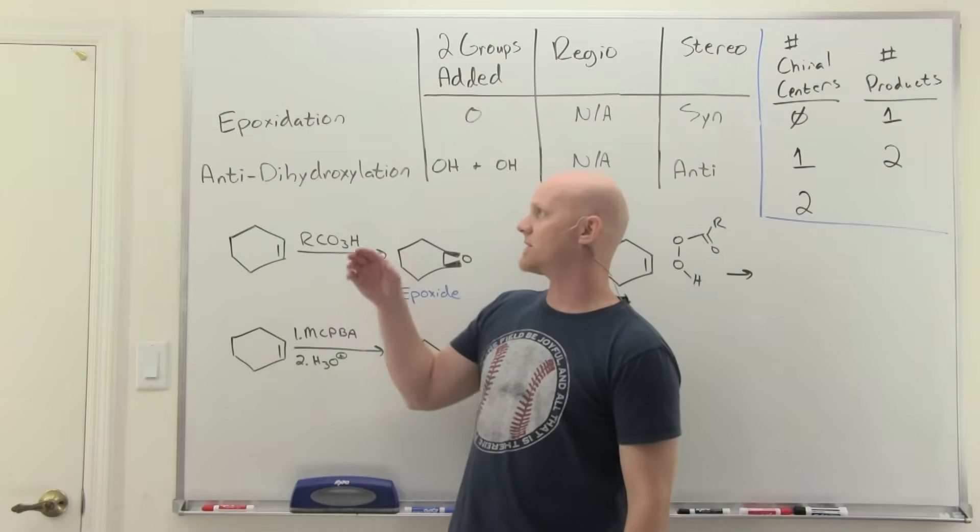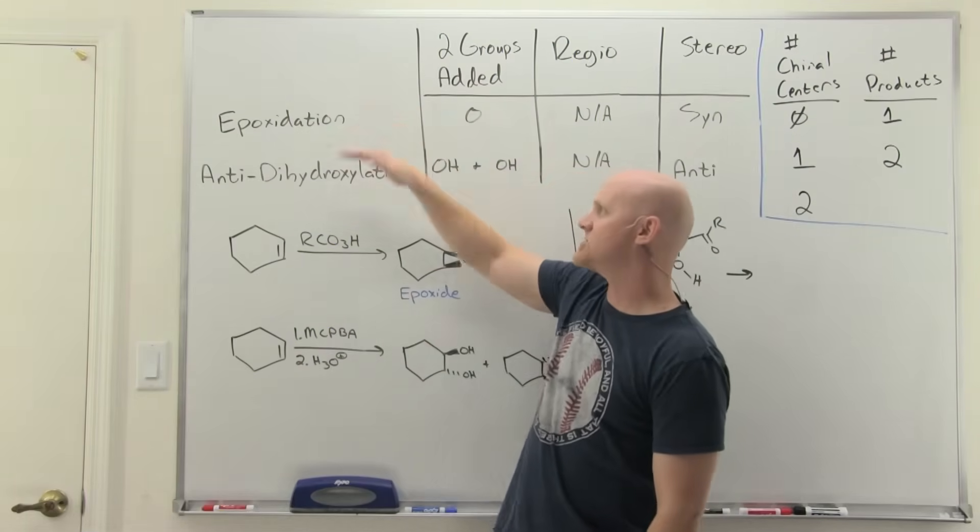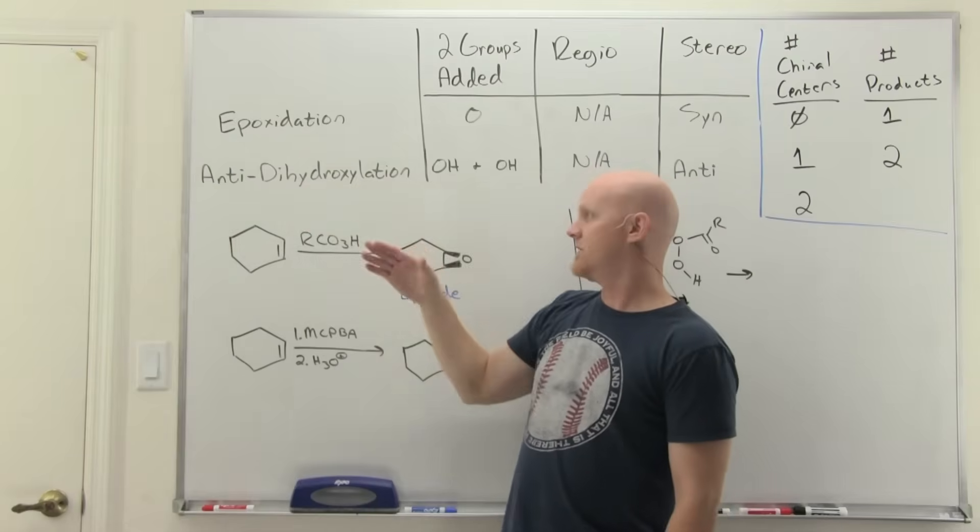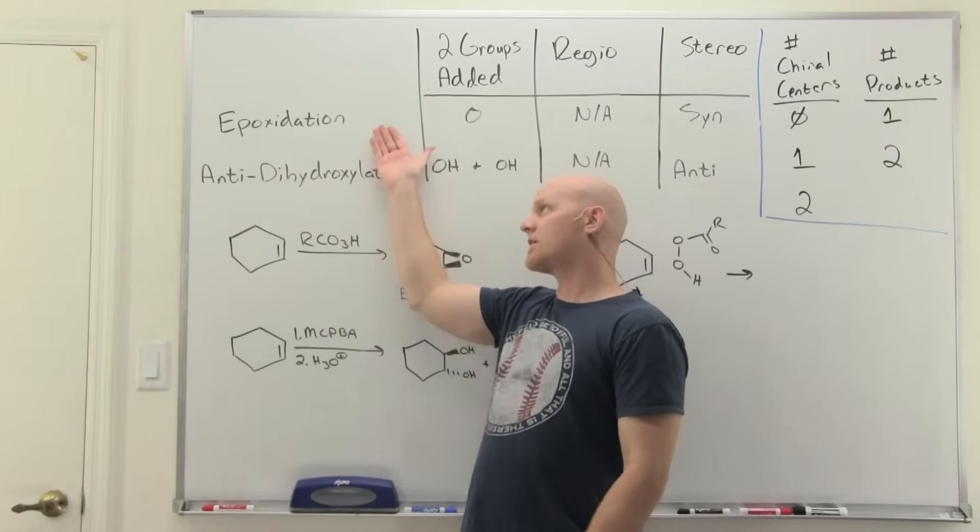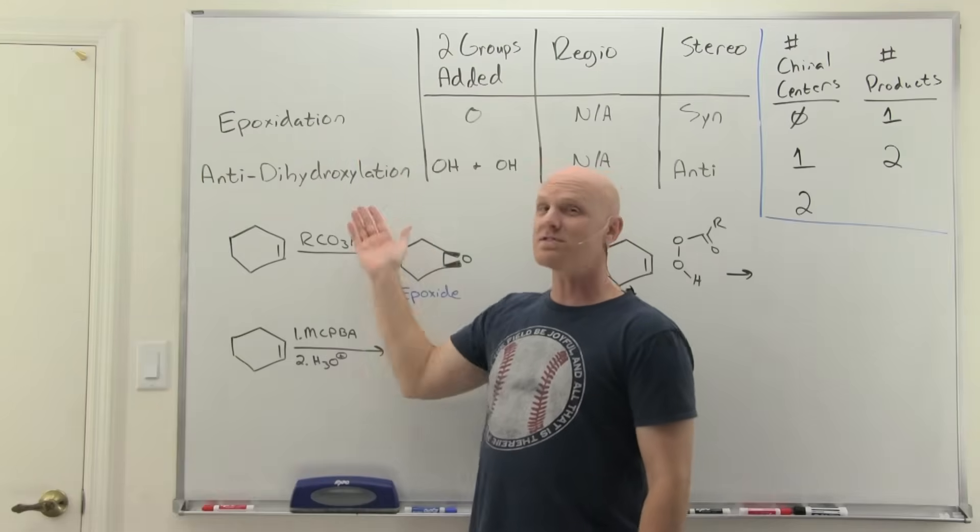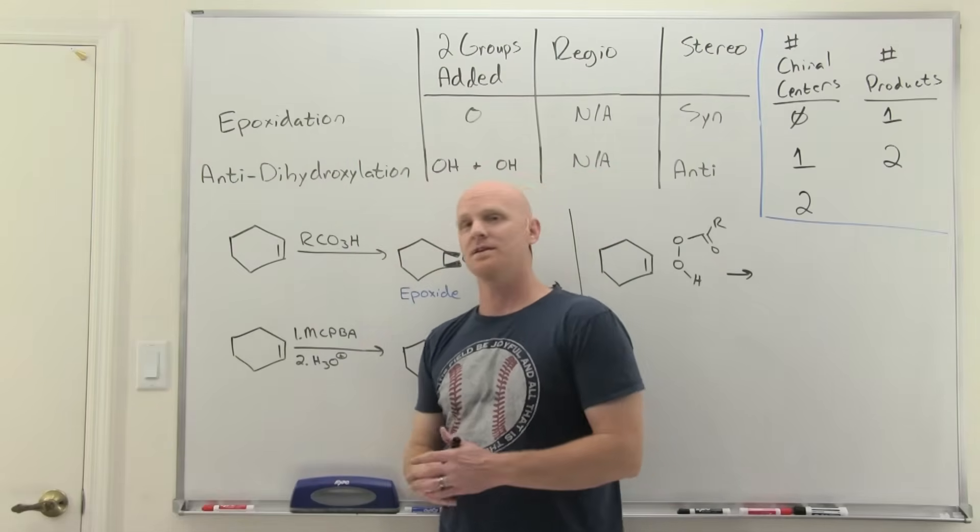The next alkene addition reactions we'll look at kind of come as a pair: epoxidation and anti-dihydroxylation. It turns out that anti-dihydroxylation, the first step is epoxidation. So the first is really part of the second, but you might see it independent as well.